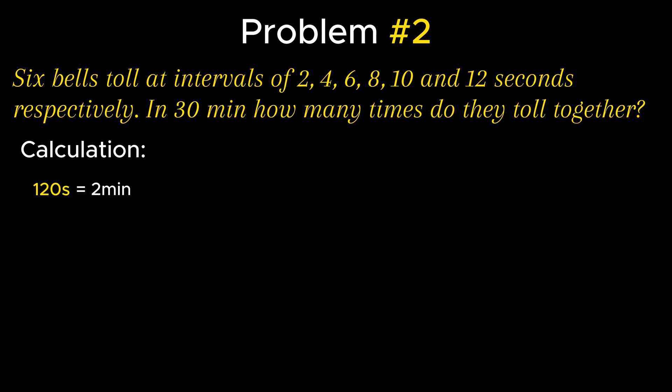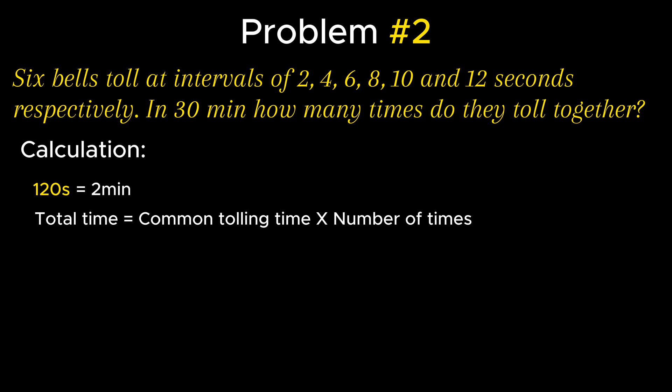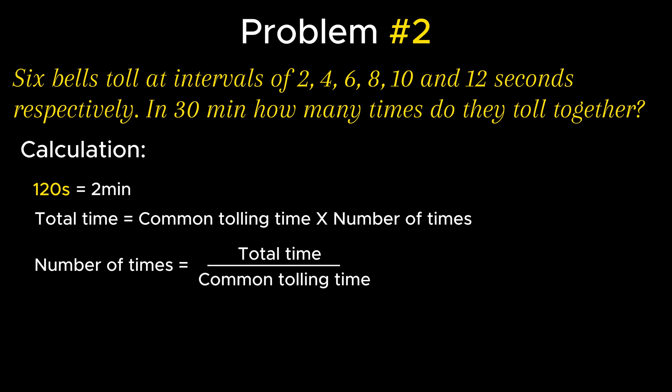According to the question, total time equals 30 minutes, which equals common tolling time multiplied by number of times. Therefore, number of times the bells ring together equals the ratio of total time to the common tolling time, which is 30 over 2, simplified as 15. Since the timer starts once all bells toll together, the required number of times is 15 + 1 = 16. Note: if the question mentions the bells start together, there is no need to add 1.